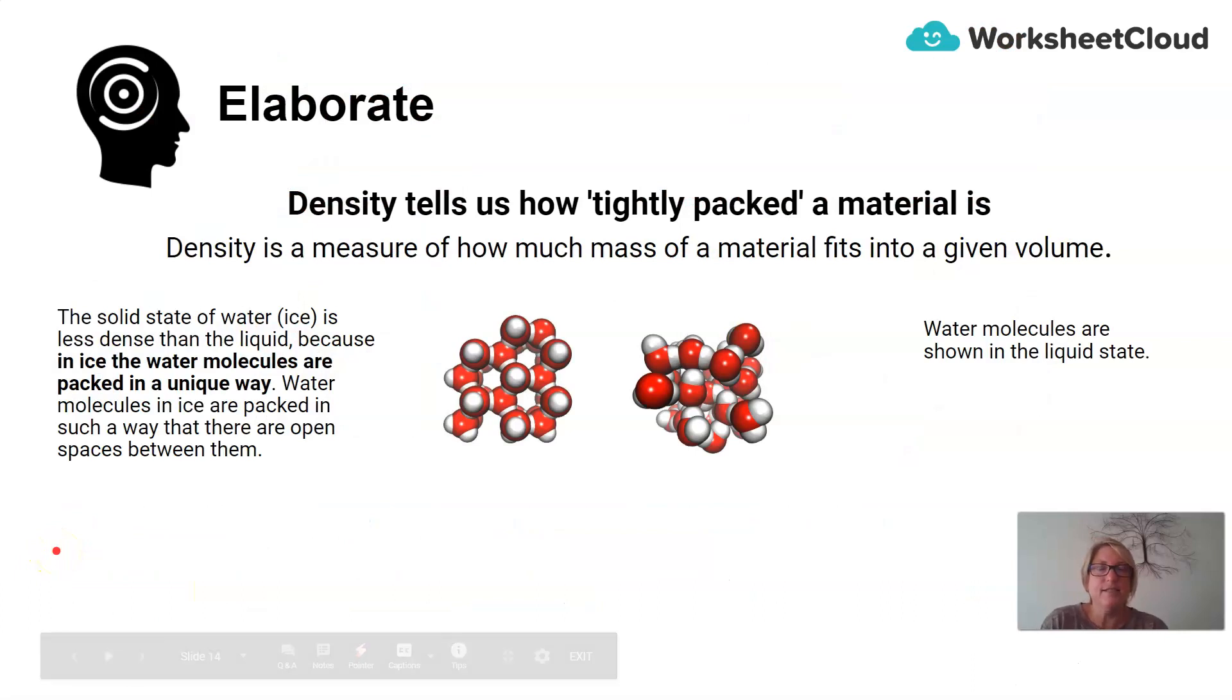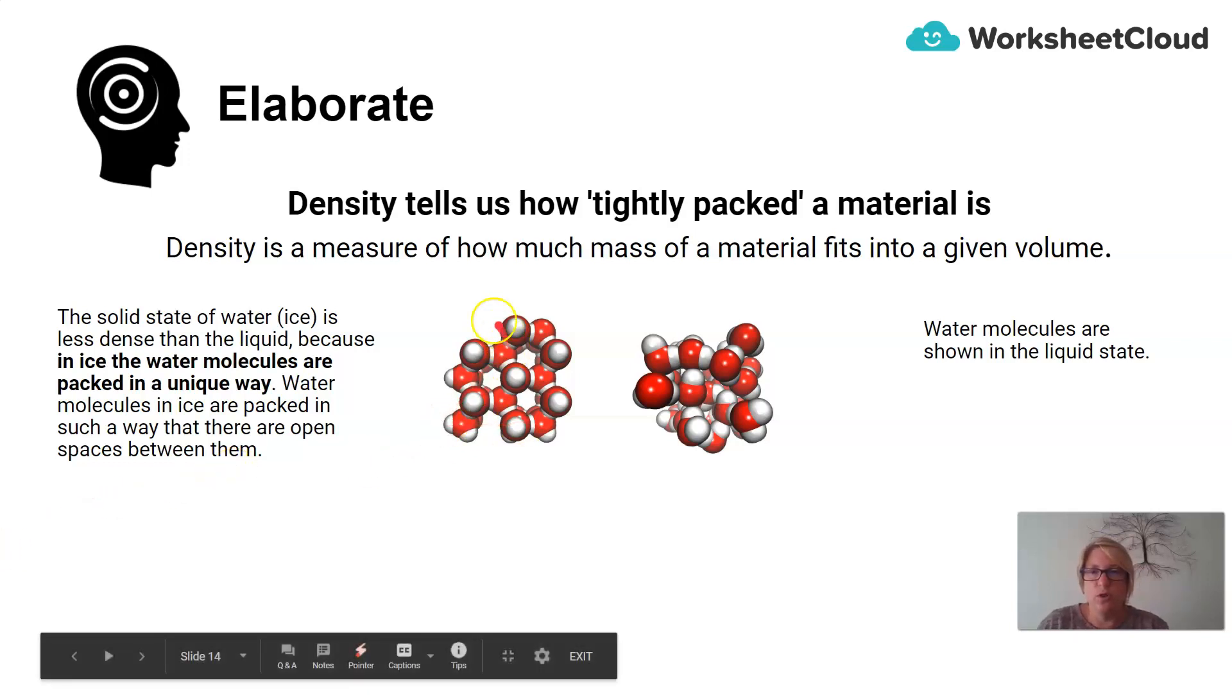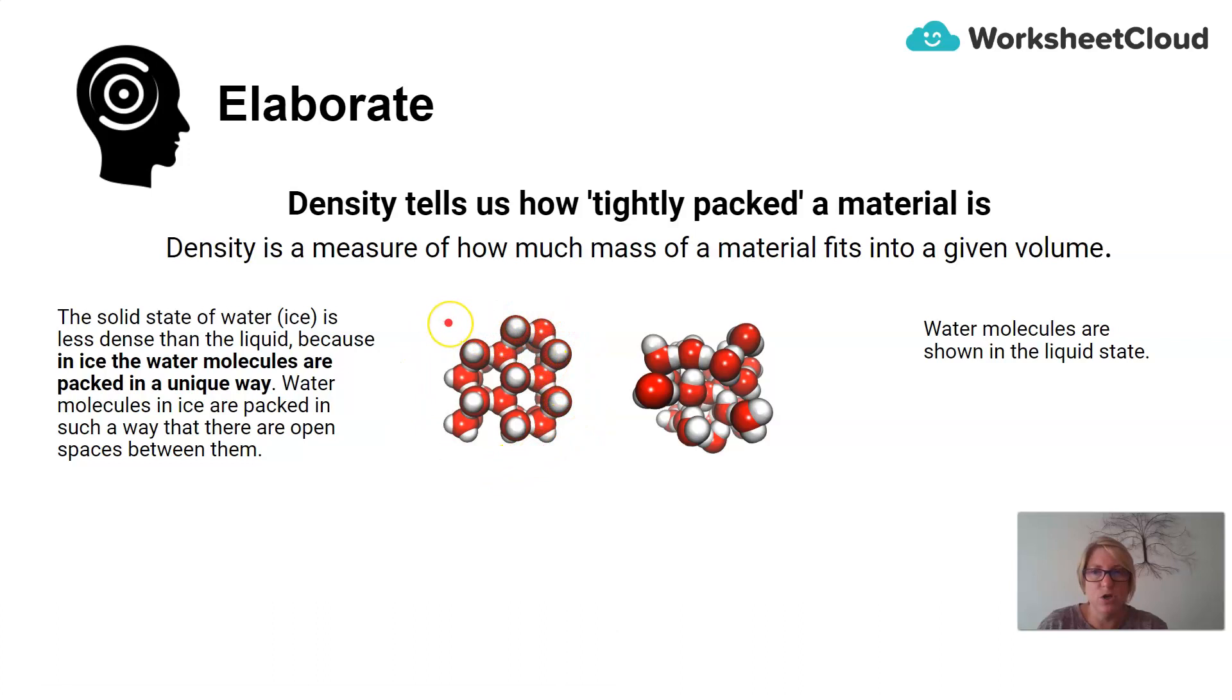Density tells us how tightly packed a material is and density is the measure of how much mass of a material fits into a given volume. So here is what the model arrangement of particles in a solid water or water in a solid state, ice, look like. The solid state of water ice is less dense than liquid because in ice the water molecules are packed in a very unique way. Water molecules in ice are packed in such a way that there are open spaces between them. And this diagram here shows water molecules in a liquid state.